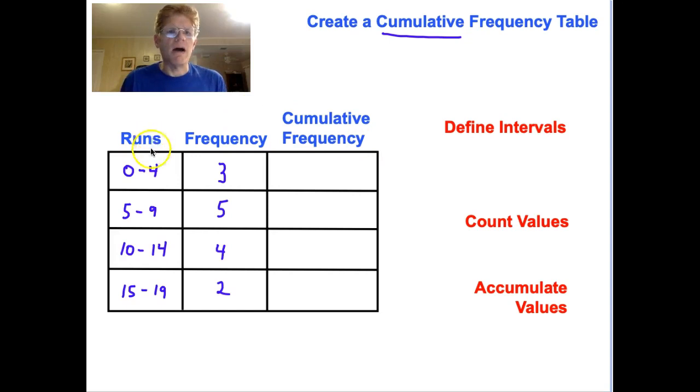We have our data from our last time where we had our runs and our frequency. These are all the same. The cumulative frequency is simply a way of counting it up as we go. So, we define our intervals just like we did before. We count our values just like we did before, and then we accumulate them. So, here's what the cumulative frequency looks like.